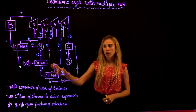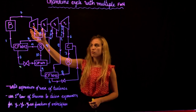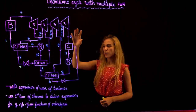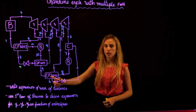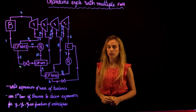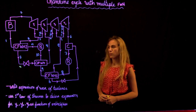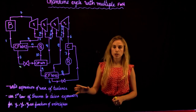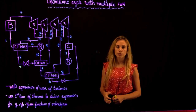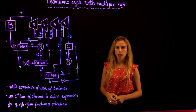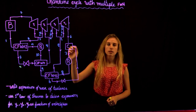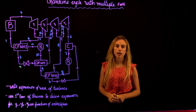We have here a process diagram where we have a series of four turbines, then we have a first cross feed water heater, a second cross feed water heater, and then an open feed water heater. We are asked to find the expression of the work of the turbines, and then using the first law of thermodynamics to solve for Y1, Y2, and Y3 as functions of enthalpies.